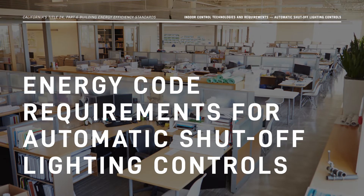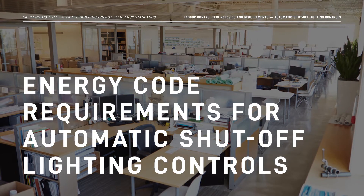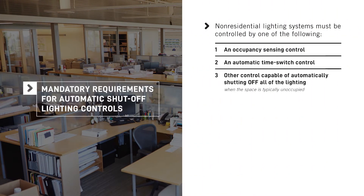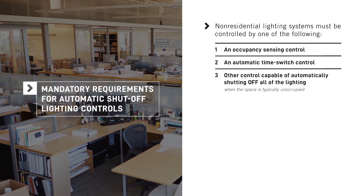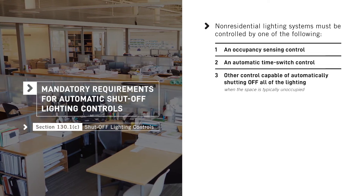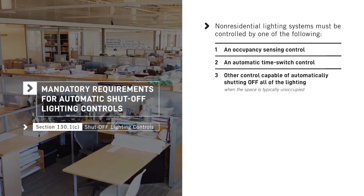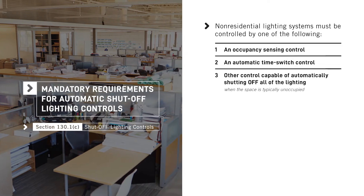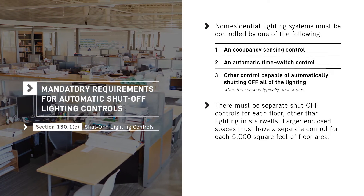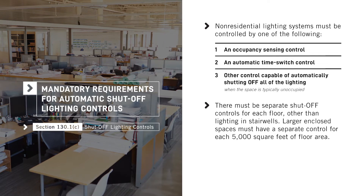Now let's discuss the specific mandatory requirements for indoor automatic shutoff lighting controls. The general requirements in Section 130.1c state that non-residential lighting systems must be controlled by either an occupancy sensing control, automatic time switch control, or other control capable of automatically shutting off all lighting when the space is typically unoccupied. There must be separate shutoff controls for each floor, and for larger enclosed spaces a separate control is required for each 5,000 square feet of floor area.